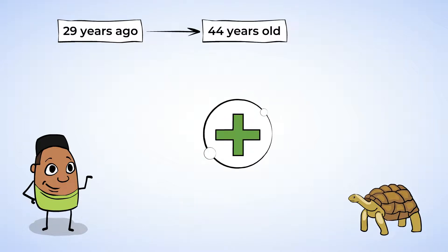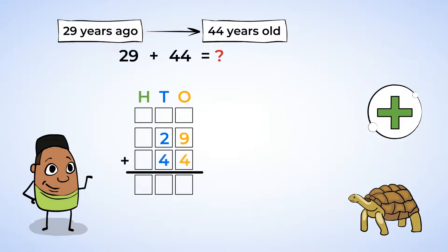We can use addition again to find the tortoise's age. We are adding 29 and 44. Let's use the place value chart again. First, we add the numbers in the ones place. 9 plus 4 is 13. We need to regroup again.